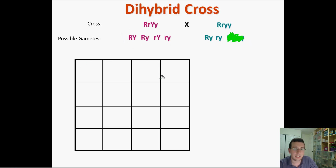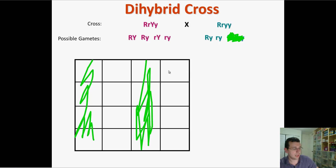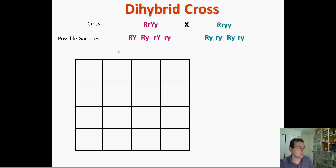Because you only have two types of gametes on one side, you don't need the full Punnett square. Instead of four by four, you only need four by two — so you can cancel out two of the columns. That's how it works with hybrid crosses: you only get a four-by-four if both parents are hybrid for both traits.